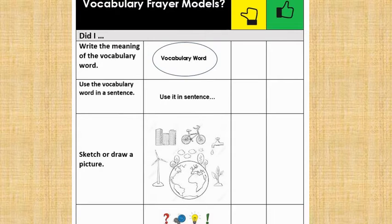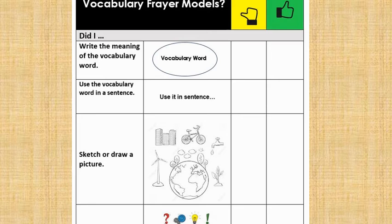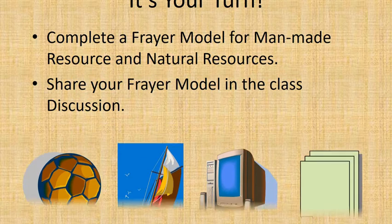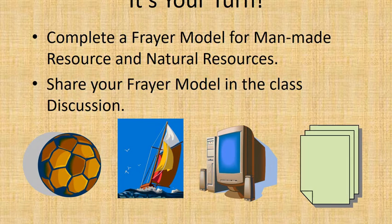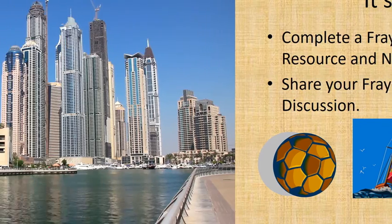How am I doing with vocabulary? For your models, here's a checklist. You will be required to write the meaning of the vocabulary word, use the vocabulary word in a sentence, look at how it's used with an example, and do a sketch as well. It's your turn — complete a Frayer model for man-made resources and natural resources, then share your Frayer model in the class discussion.